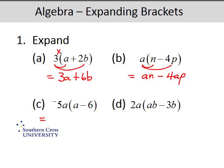OK, this one's a little more complex. Negative 5a times a, a times a is a squared. So that's negative 5a squared. Negative times the negatives are positive. 5 times 6 is 30a.